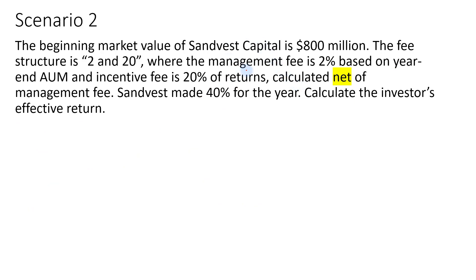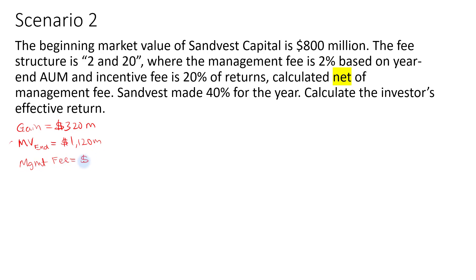For scenario two, all the details are the same as scenario one, except that the incentive fee is now 20% of returns calculated net of management fees. The gains, as computed earlier, is $320 million. The market value at the end of the year — the ending AUM value — is $1,120 million. The management fee is still $22.4 million, which is 2% of $1,120 million.